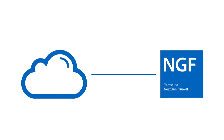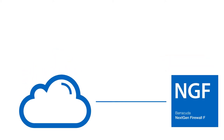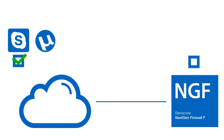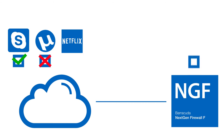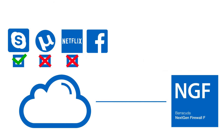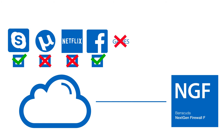For example, you may want to prioritize voice over IP and video conferencing, and block peer-to-peer file sharing and Netflix. You may want to allow marketing teams to access Facebook, but prevent employees from accessing Facebook games.